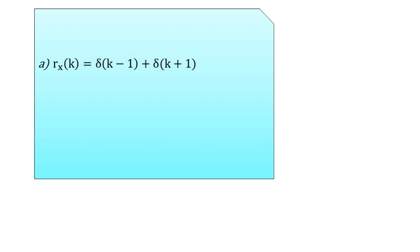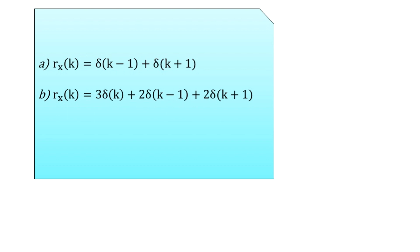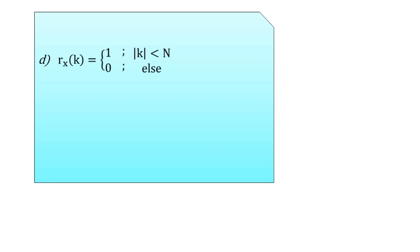For part a, rx(k) = δ(k−1) + δ(k+1). For part b, rx(k) = 3δ(k) + 2δ(k−1) + 2δ(k+1). Part c is rx(k) = e^(j·kπ/4). Part d has the autocorrelation sequence rx(k) equal to 1 when |k| < N, and 0 elsewhere.